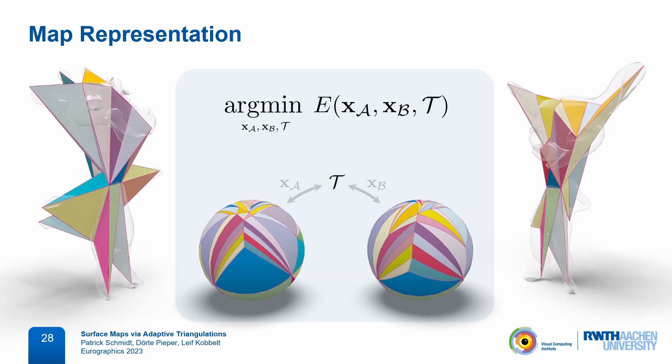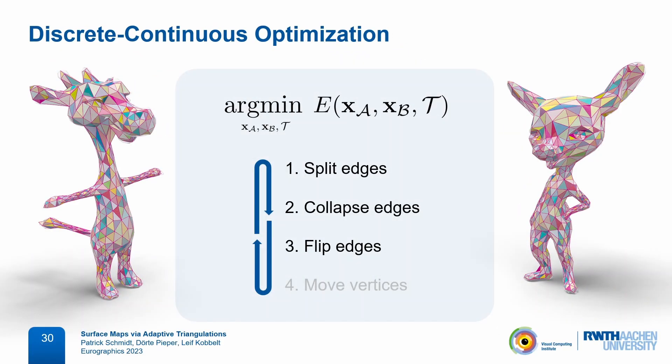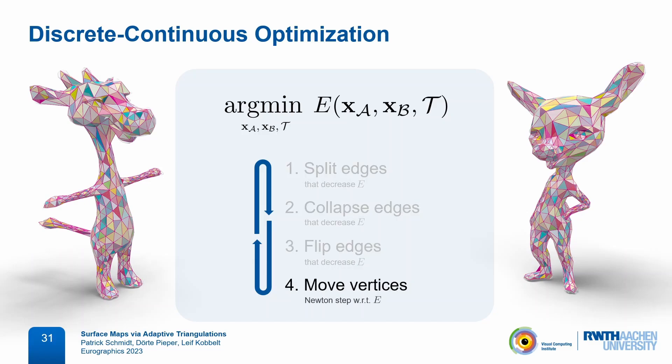Our optimization algorithm looks much like a remeshing algorithm. In each iteration, we first perform a series of edge splits, then edge collapses, and then edge flips. For each candidate operation, we locally evaluate the objective function before and after, and only apply updates that strictly decrease the objective. After that, instead of a smoothing step, we apply a second-order Newton update of vertex positions on the spheres with respect to the same objective.